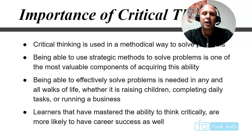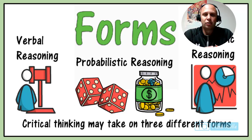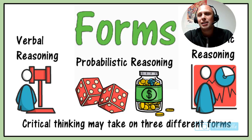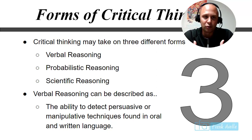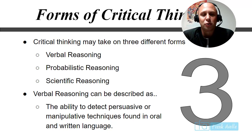Let's look at some forms of critical thinking. Critical thinking may take on three different forms: verbal reasoning, probabilistic reasoning, and scientific reasoning. Verbal reasoning can be described as the ability to detect persuasive or manipulative techniques found in oral and written language.